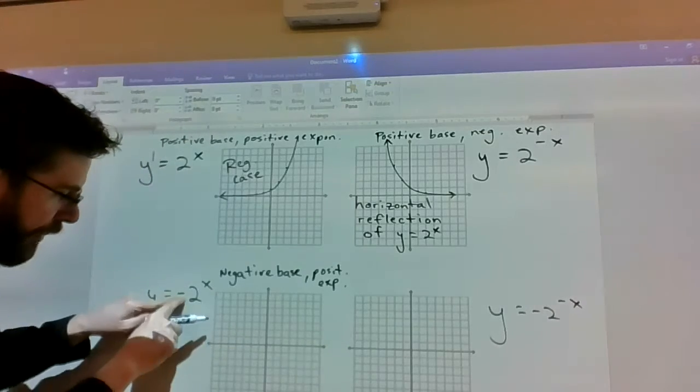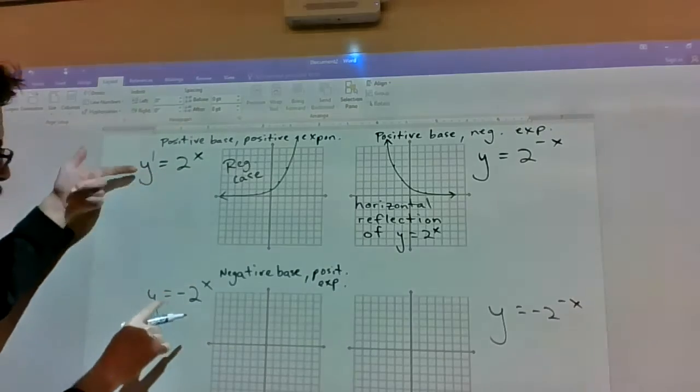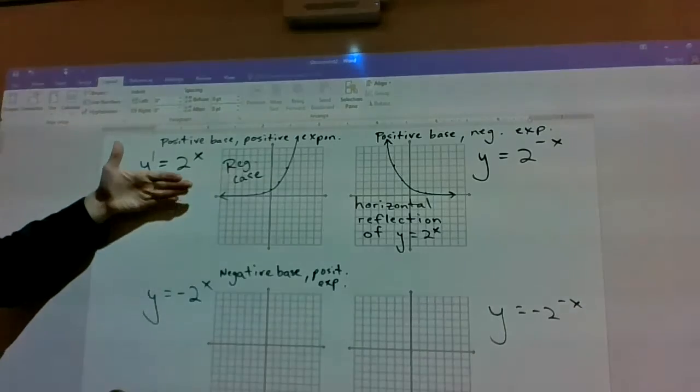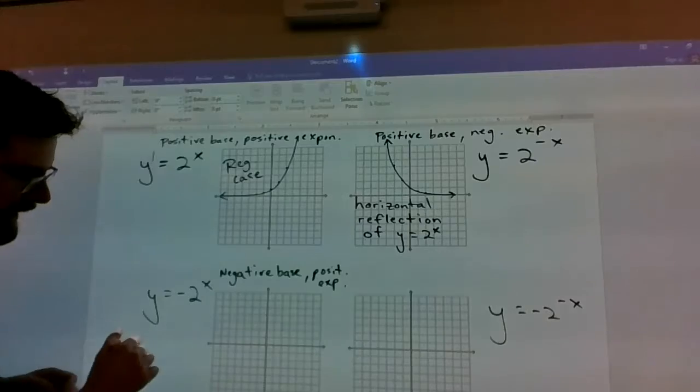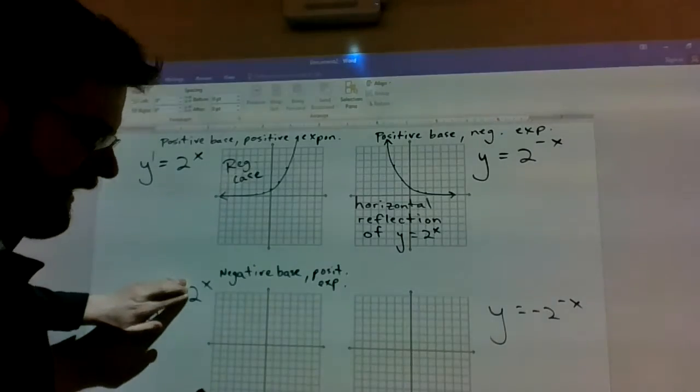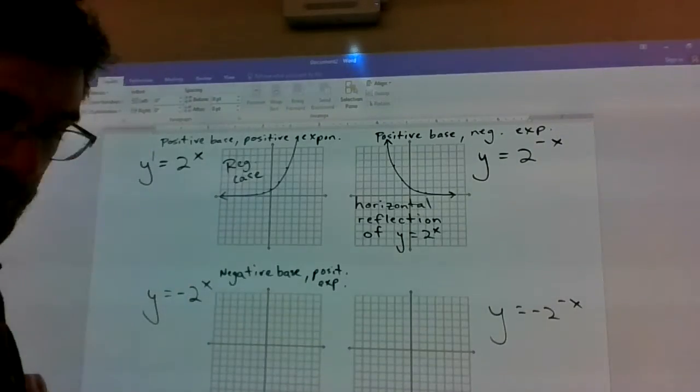Well, putting a negative out front basically says all of your y values are going to be flipped over the x-axis. So if you recall, if I take 2 squared, I get 4. This is saying make that 4 negative.